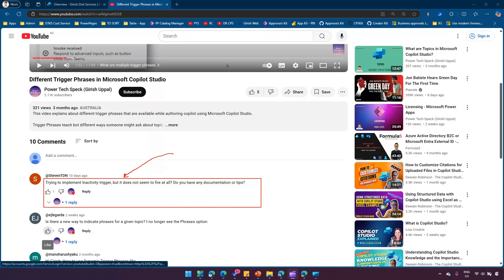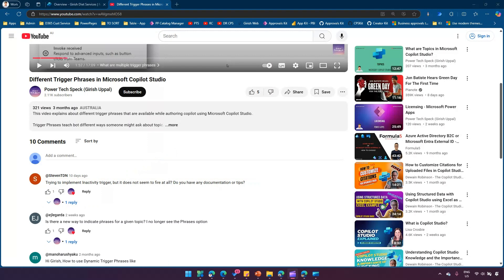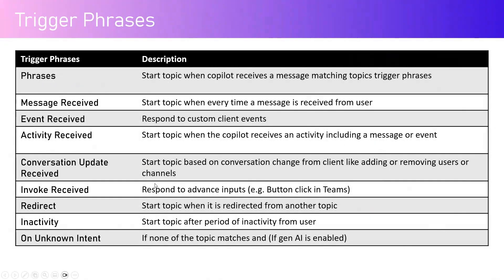So I thought, why not try this inactivity trigger and see how we can simulate that in the authoring interface. Just to give a recap: inactivity trigger is basically used to start a topic after a period of inactivity from the user. For example, if you have a chatbot or copilot and the user has gone quiet for a specific period of time and you want to trigger the conversation again, you can make use of the inactivity trigger.